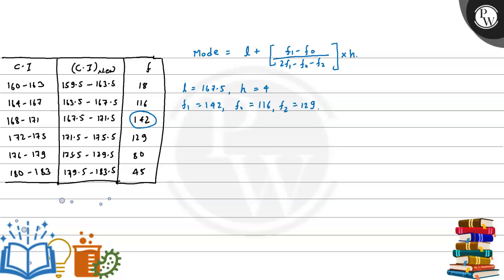So the mode is equal to 167.5 plus (142 minus 116) divided by (284 minus 116 minus 129) multiplied by 4.